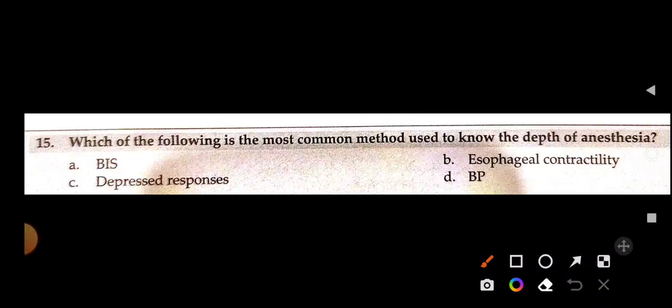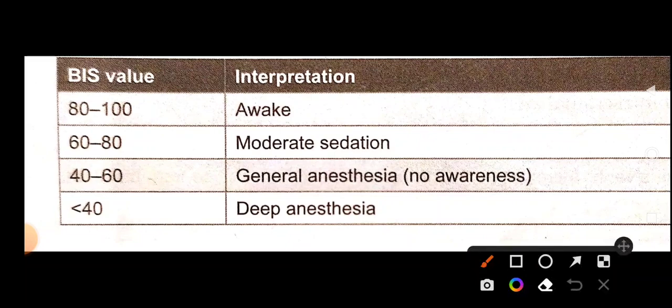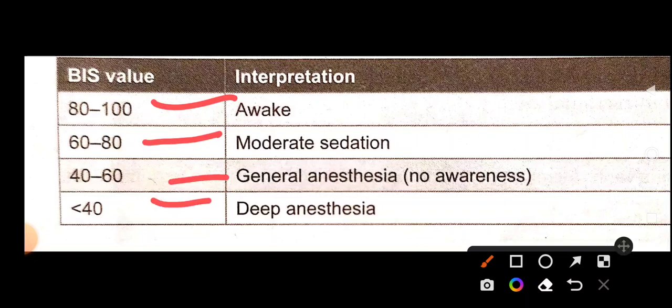Which is the most common method used to know the depth of anesthesia? Options: BIS, esophageal contractility, depressed responses, or BP. The best answer is BIS (Bispectral Index). BIS values interpretation: 80–100 = patient is awake; 60–80 = moderate sedation; 40–60 = general anesthesia with no awareness; less than 40 = deep anesthesia.